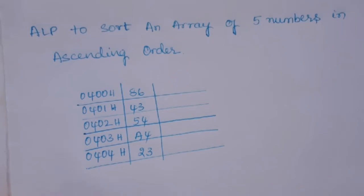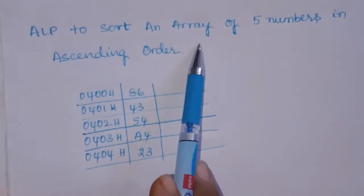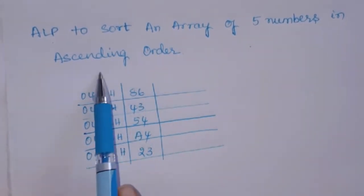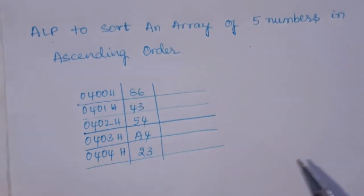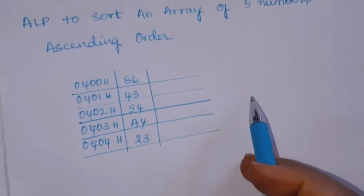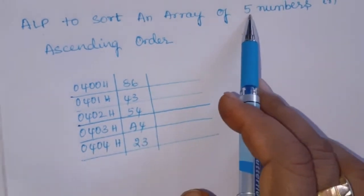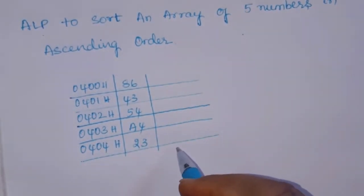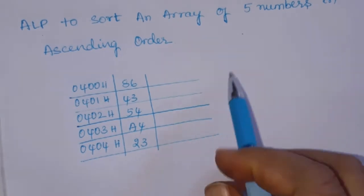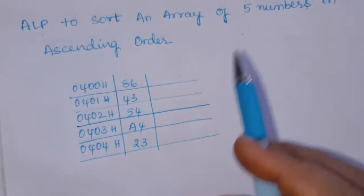Hello students, let's write an assembly language program to sort an array of five numbers in ascending order. For better understanding, we are taking only five numbers. Once we write the program, the same program can be applied — it can work with greater numbers also.